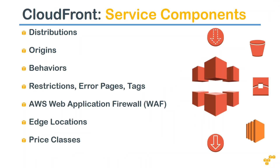Here are the service components that make up CloudFront. When you say 'distribution,' think of it as the data you are going to distribute — it might be a static website, media files, images, or music files. When you talk about 'origins,' it is from where you are picking up all this data. Origins can be your EC2 servers, on-premise servers, third-party storage reachable over an IP address, or your S3 bucket.